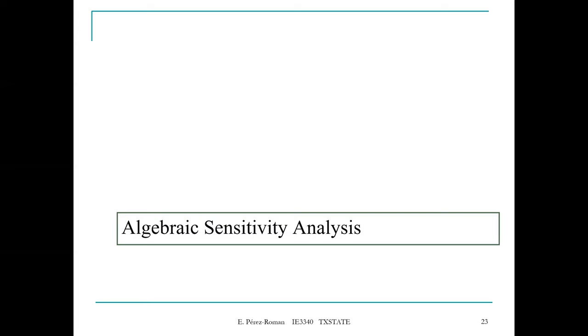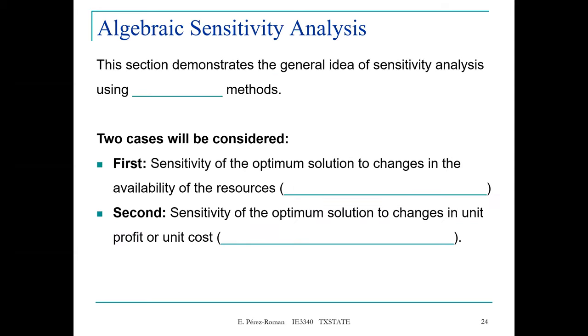As you know, when we use the graphical method we are constrained by the number of decision variables we can solve for. In this algebraic sensitivity analysis, we are going to perform the analysis from a different perspective using algebra, but this will allow us to perform the analysis for problems that have more than two decision variables. This section demonstrates the general idea of sensitivity analysis using algebraic methods.